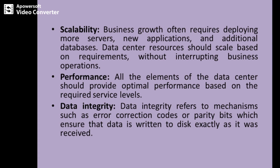Next is data integrity. For example, if I write a block with value ABC into the storage system, the same value must be written within the storage medium. If any error occurs, it must be identified and rectified. Data integrity refers to mechanisms such as error correction codes or parity bits, which ensure that data is written to disk exactly as it was received — whatever data is received, that same data is written into the data center.